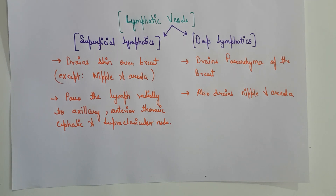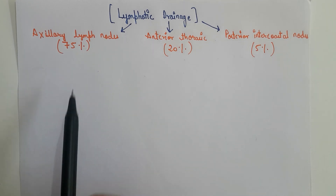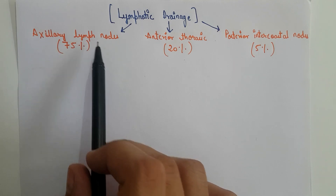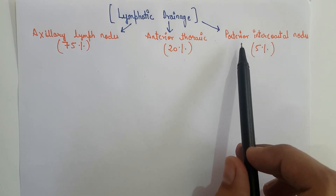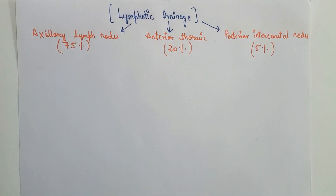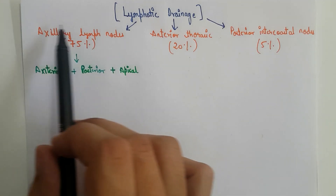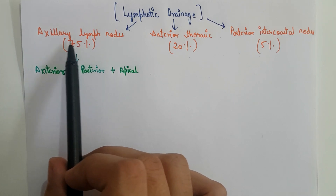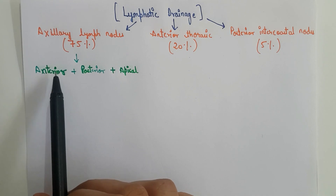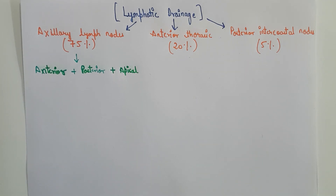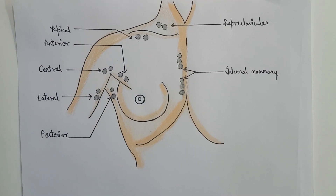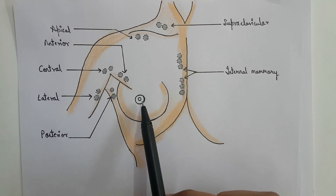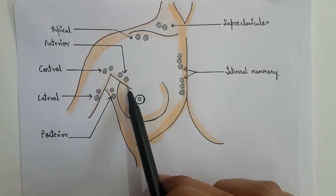Now let us talk about some further interesting points. 75% of the lymph from the breast drains into the axillary lymph nodes, 20% drains into the anterior thoracic or parasternal lymph nodes, and finally nearly 5% drains into the posterior intercostal lymph nodes. Out of the 75% draining to the axillary nodes, the maximum amount drains into the anterior group because of the presence of the subareolar plexus of Sappey, located deep to the areolar part of the breast. This subareolar plexus of Sappey drains its lymph directly into the anterior group of axillary lymph nodes.